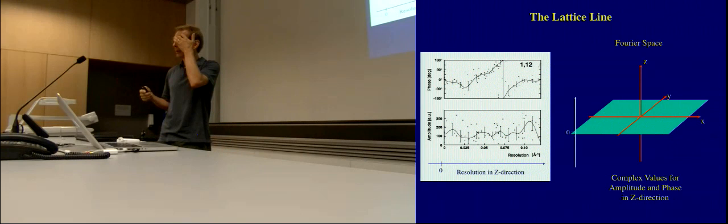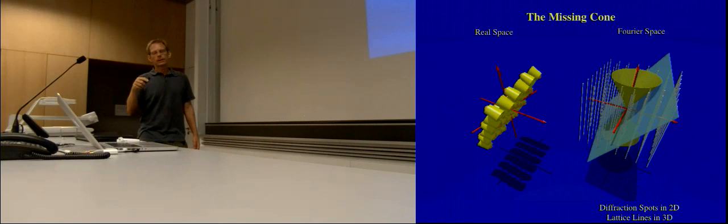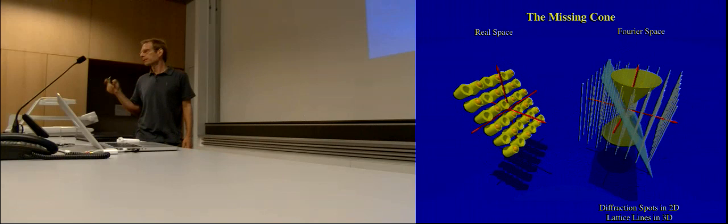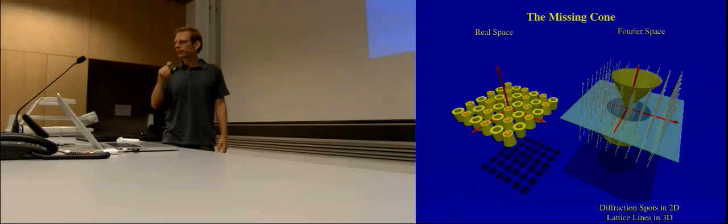The problem is that we can only tilt to 60 degrees — the sample holder can't go further. So we can never measure the amplitudes and phases within this missing cone. Brian Gibson and our group developed an algorithm to fill these data with additional knowledge. We plan to put this also into 2DX to fill the missing cone information.